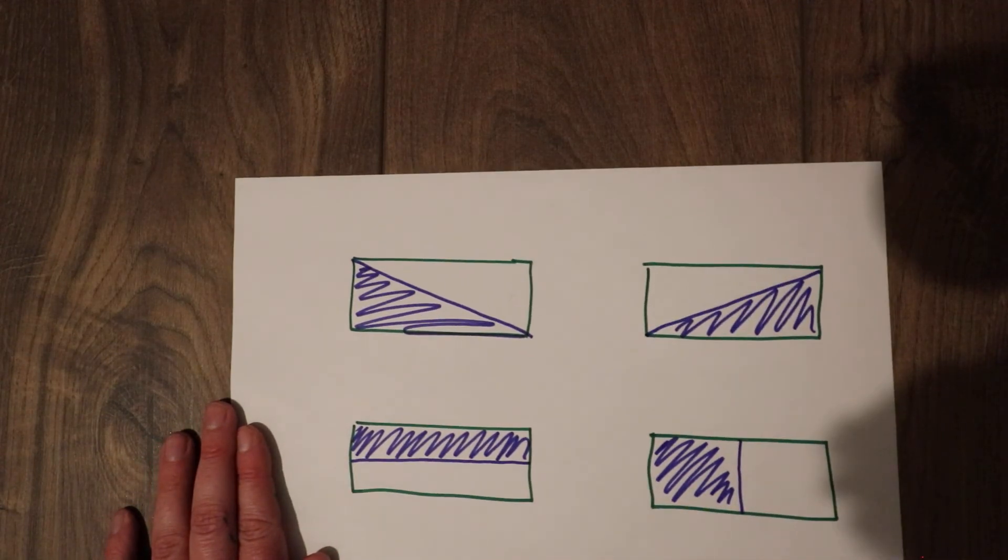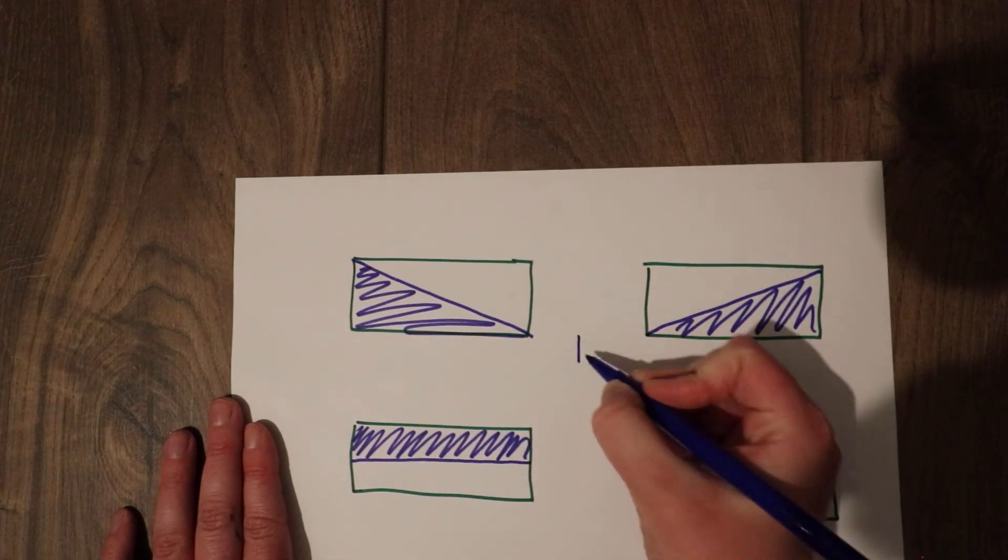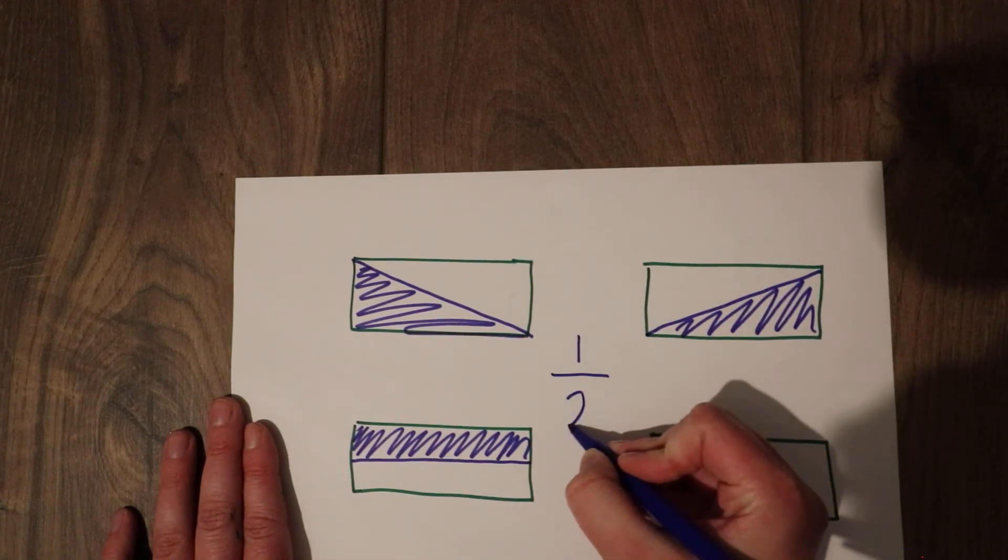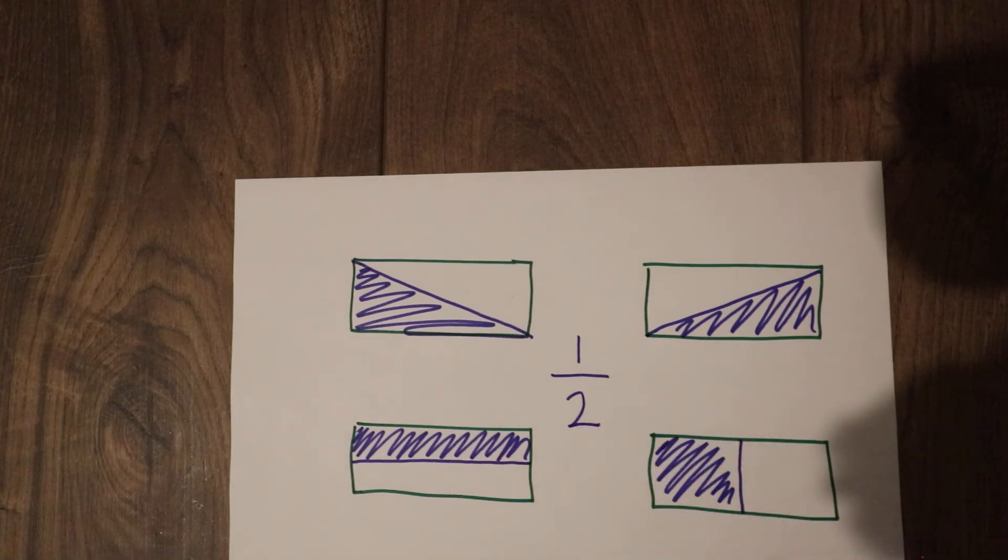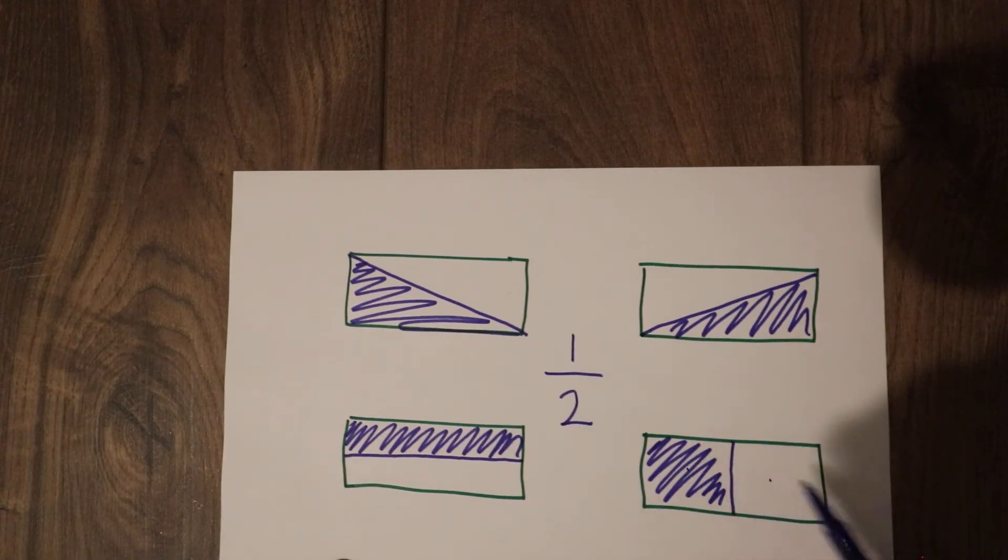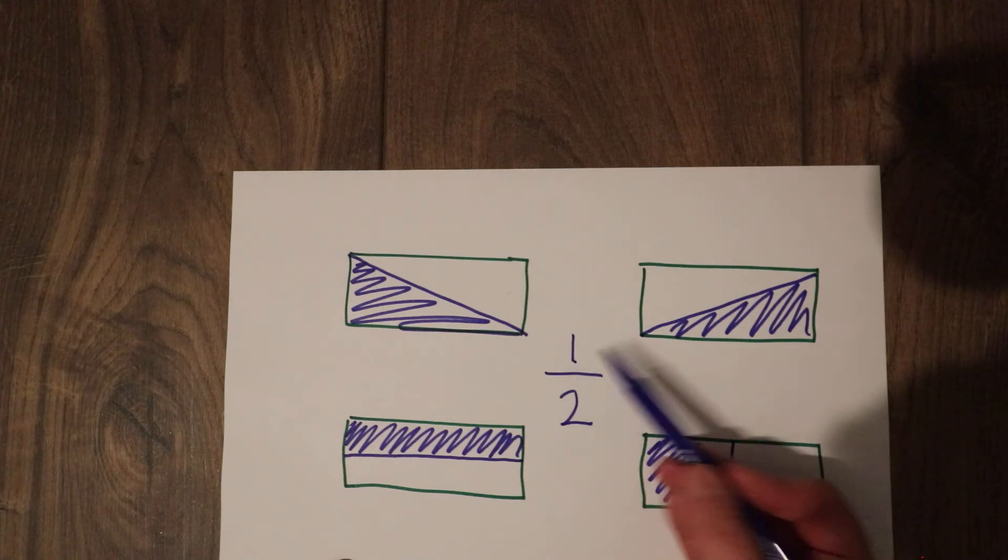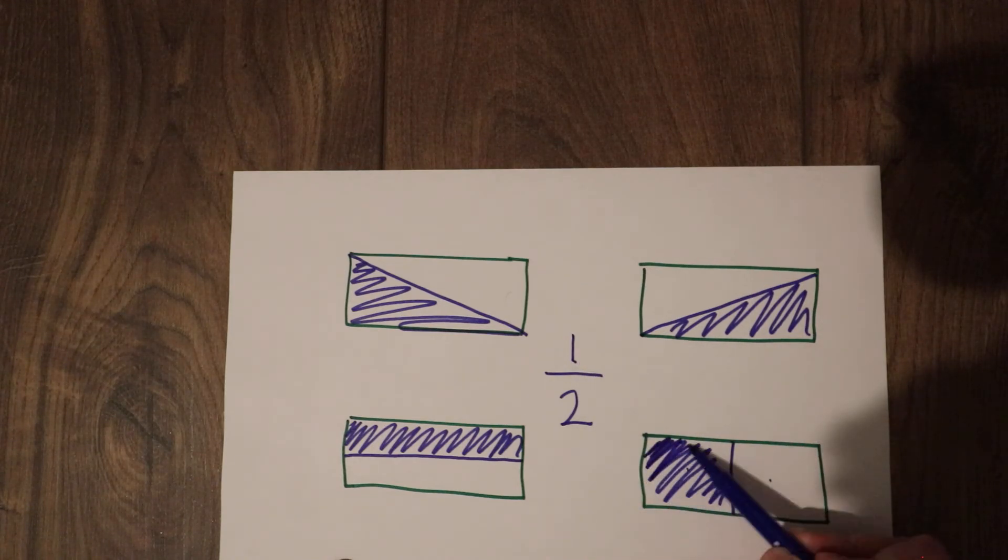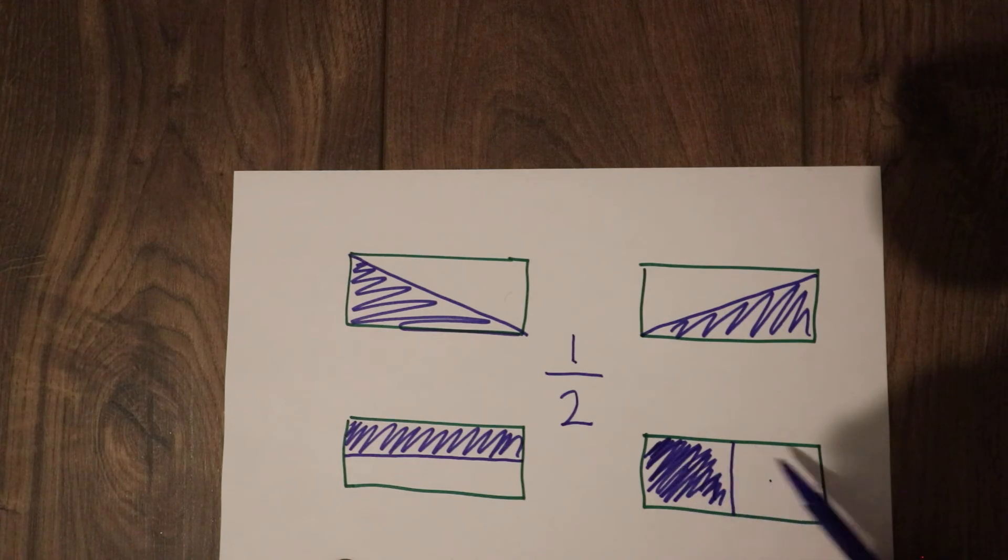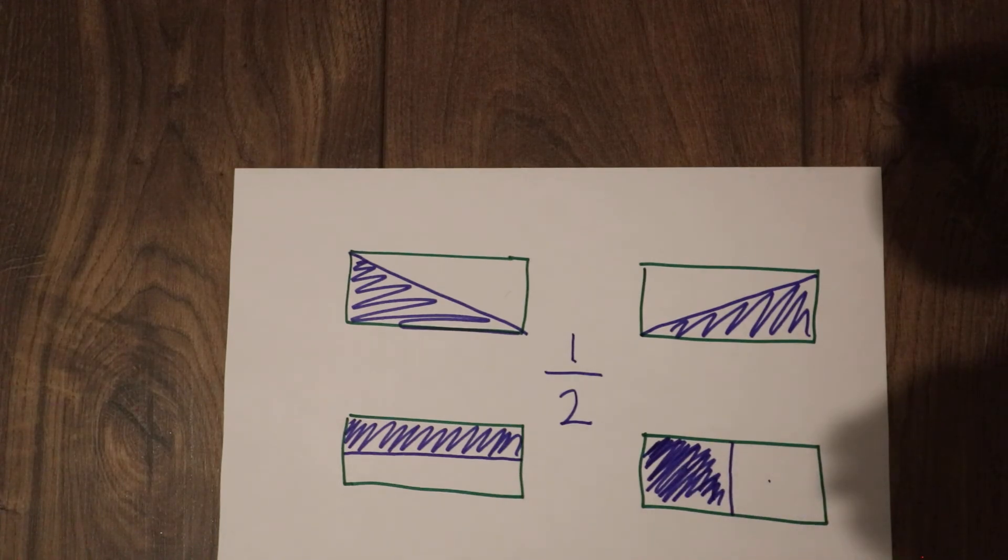Now, finding half, half is a fraction and it looks like this. You might have seen this before and it means that there are two parts, one, two, and I would like to colour one of them. So, one half is one part of my two parts.